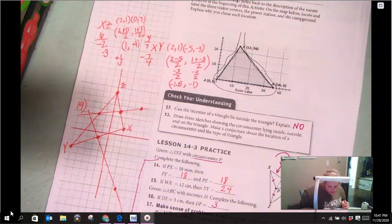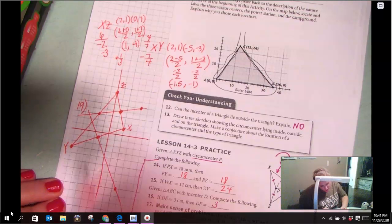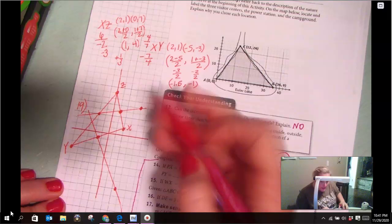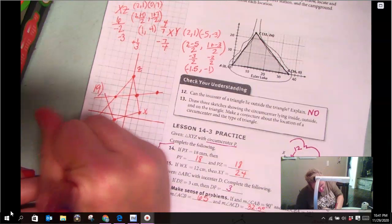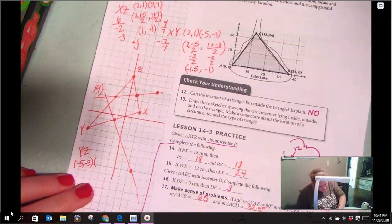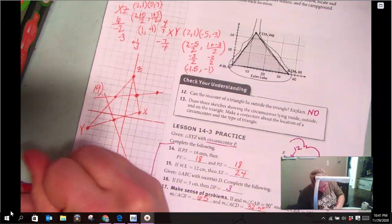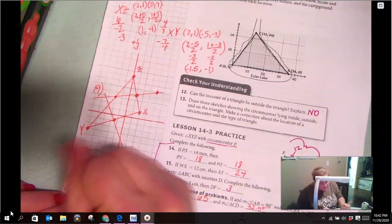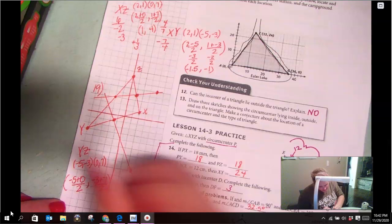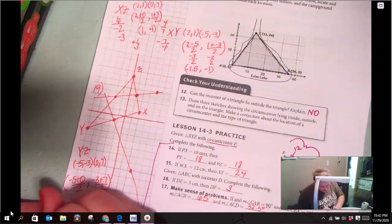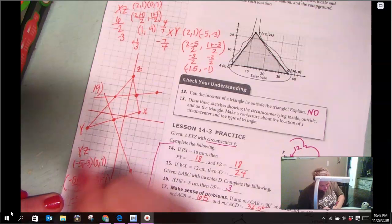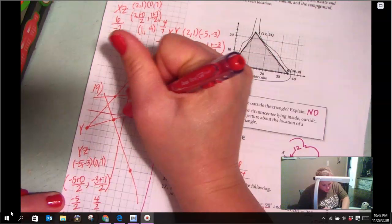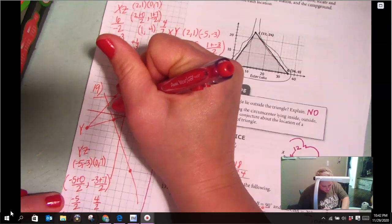Then, we have to do YZ. Y is located at (-5, -3), and Z is located at (0, 7). So, I'm going to add my x's. Negative 5 plus 0 divided by 2, comma, negative 3 plus 7 divided by 2. Negative 5 over 2 is negative 2.5, and positive 4 divided by 2 is just 2. So, (-2.5, 2).